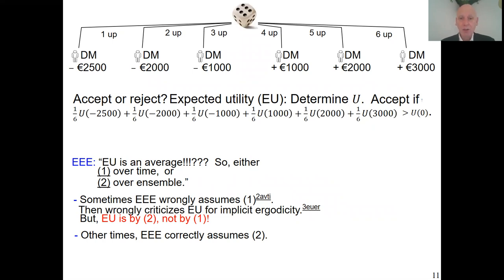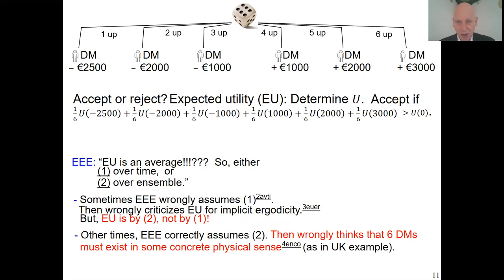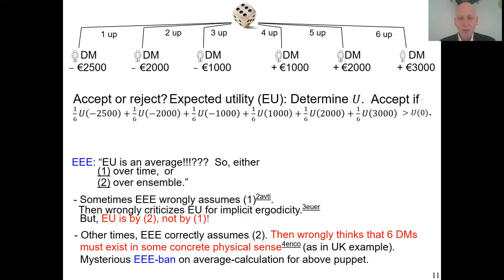The argument goes: for an average to make sense, all those six hypothetical puppets must exist in some concrete physical sense — they must be able to meet and share resources. In the UK population example this can be conceived, but for a single decision-maker it cannot. Of those six puppets, one will come into existence but the other five will never exist; they can never meet and share resources. Therefore, Ergodic Economics says the average is not meaningful and puts a ban on calculating averages. I am puzzled — it doesn't say what calculation would be allowed instead.